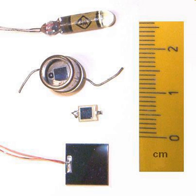PN photodiodes are used in similar applications to other photodetectors, such as photoconductors, charge-coupled devices, and photomultiplier tubes. They may be used to generate an output dependent upon illumination — analog, for measurement — or to change the state of circuitry — digital — for control, switching, or digital signal processing. Photodiodes are used in consumer electronics devices such as compact disc players, smoke detectors, medical devices, and receivers for infrared remote control devices used to control equipment from televisions to air conditioners.